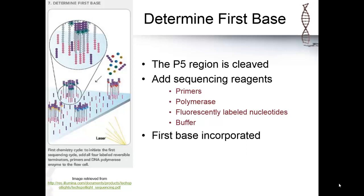After the amplification, the first base must be determined. The P5 region is cleaved, resulting in clusters containing only fragments which are attached by the P7 region. This ensures that all copies are sequenced in the same direction.